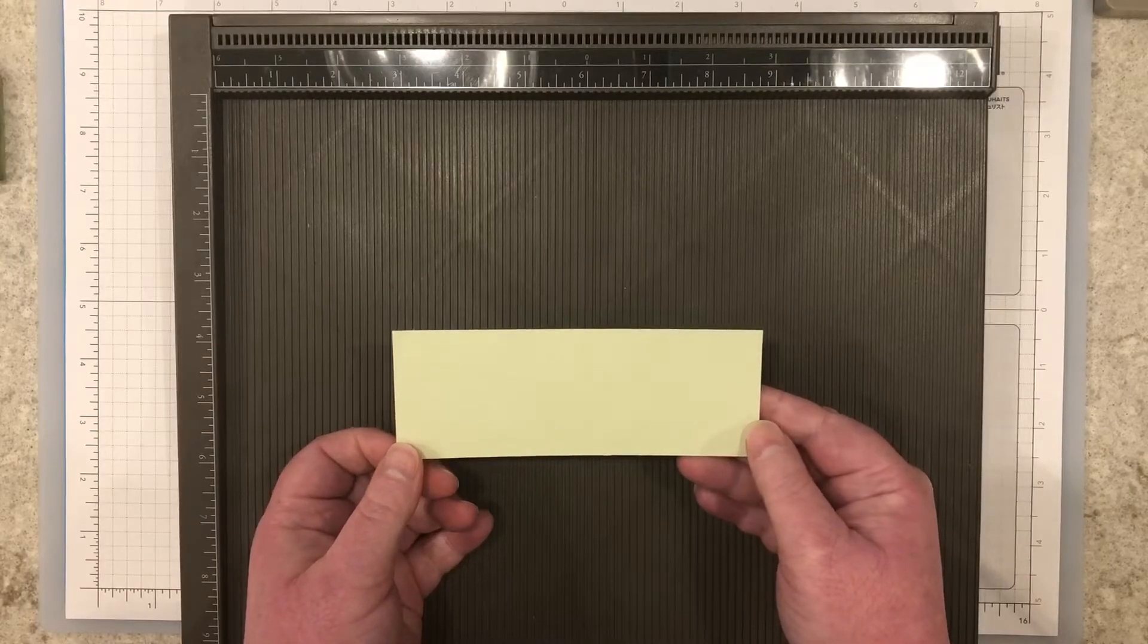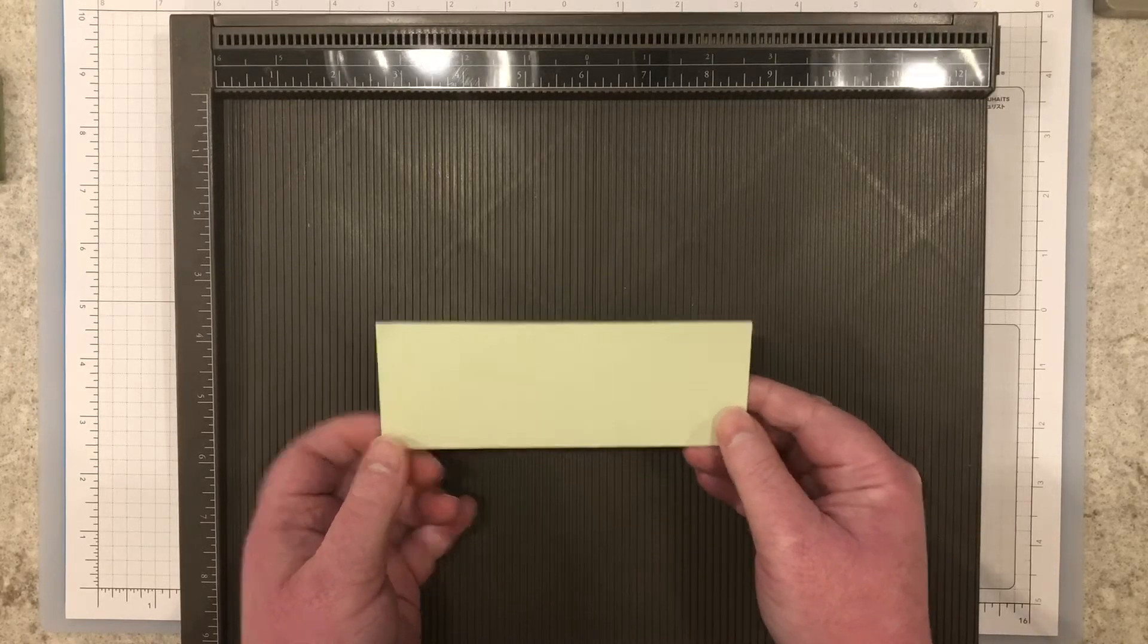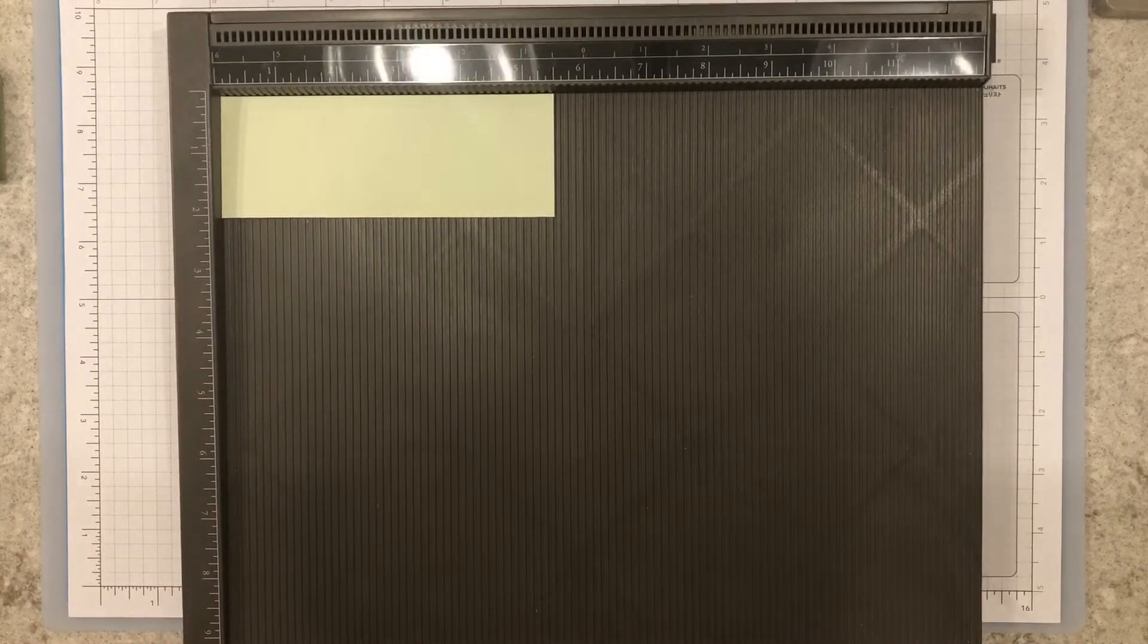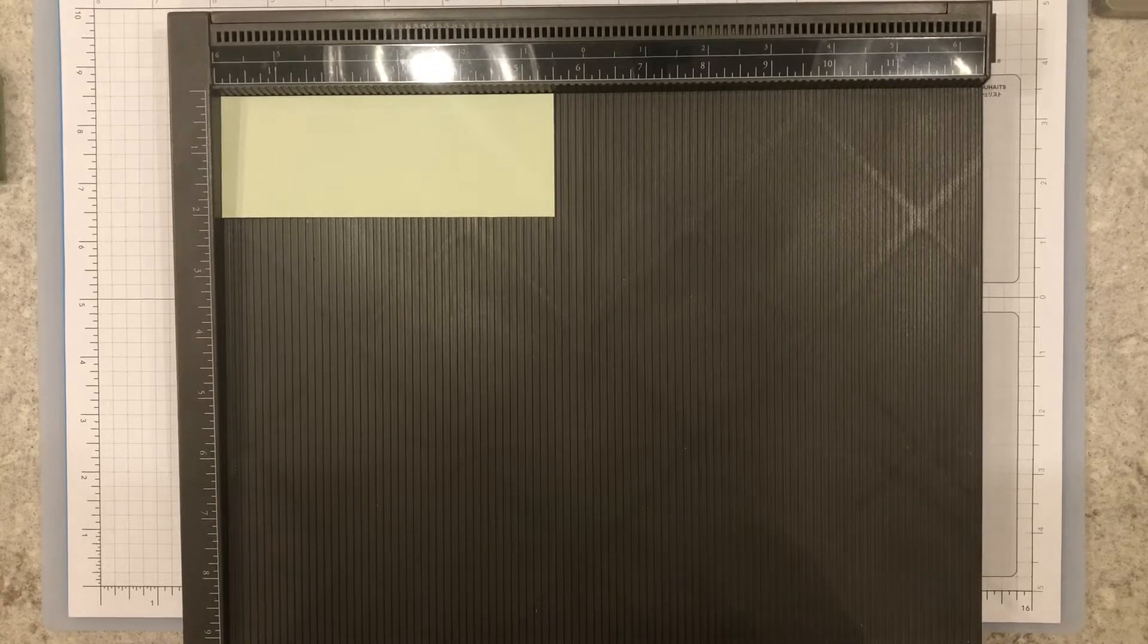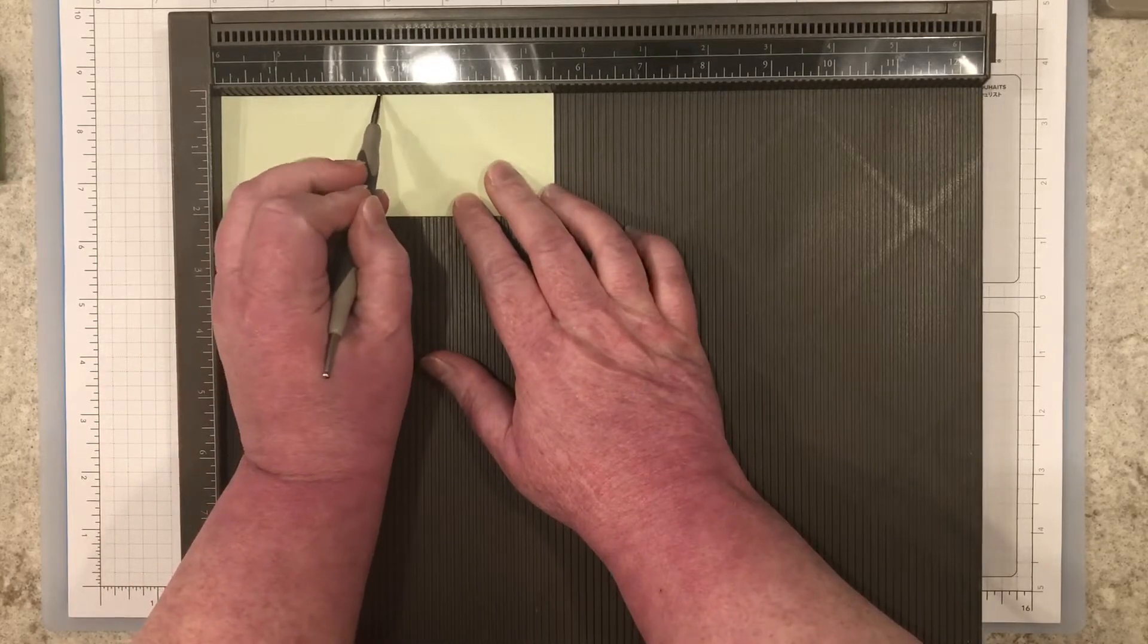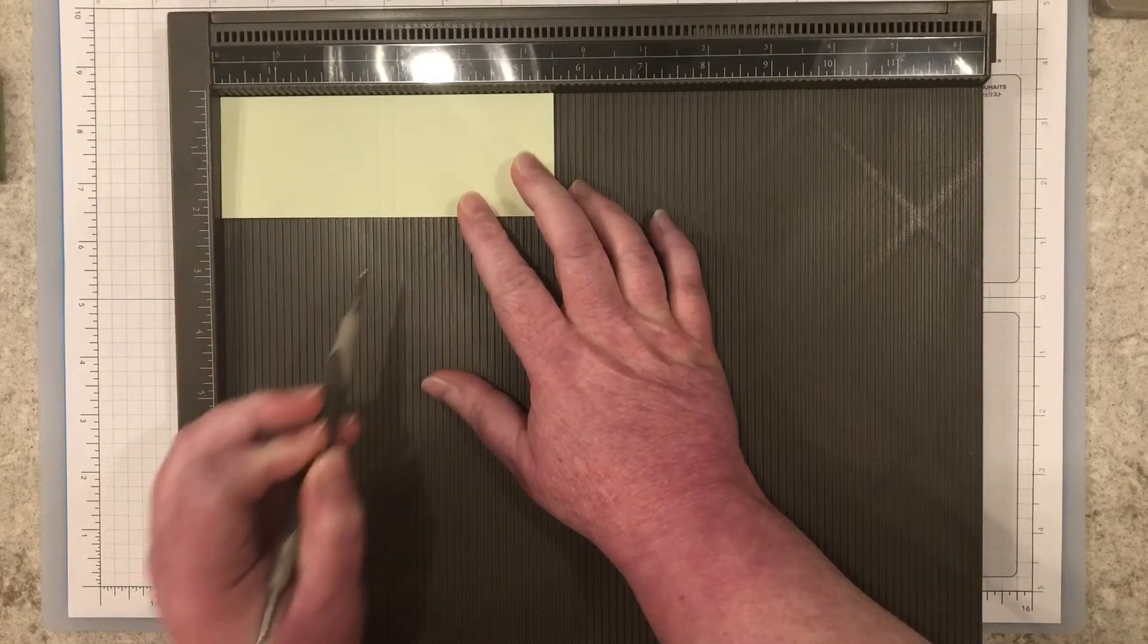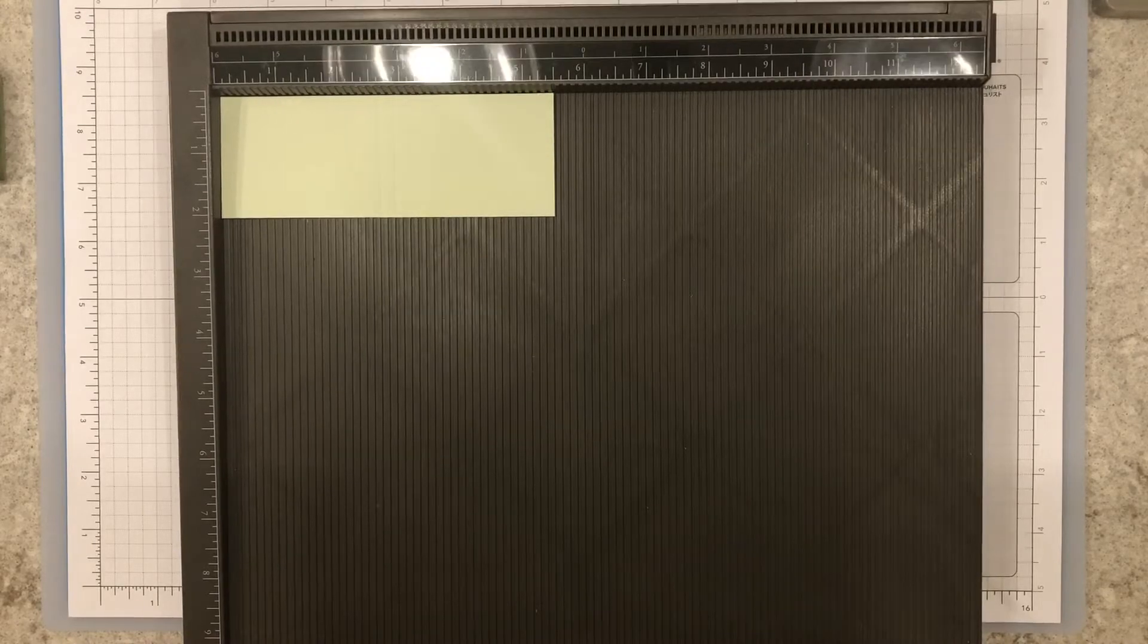Cut a piece of soft seafoam cardstock that measures five and a half inches by two inches. Place it in the top corner of your simply scored scoring tool and score at two and five-eighths and two and seven-eighths.